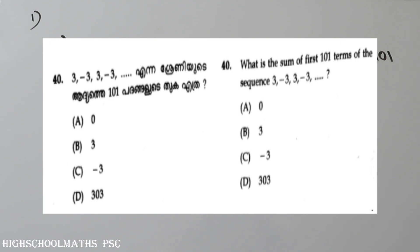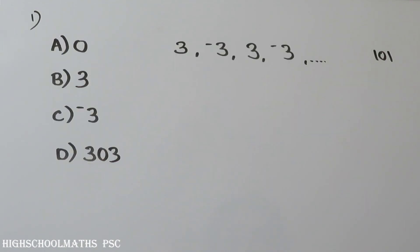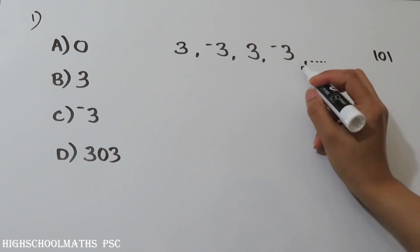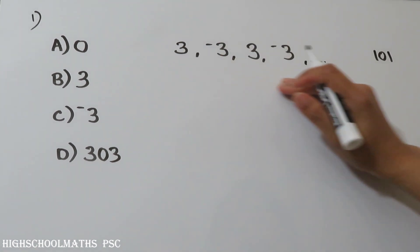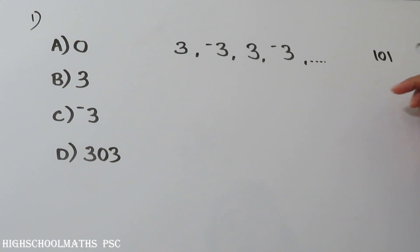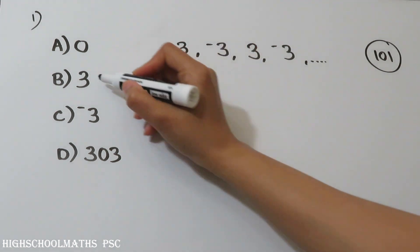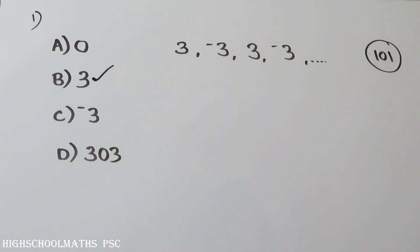The options are: 0, 3, minus 3, or not 3. Now, we have done 3, minus 3, minus 3. Let's go through this question. Here is the answer — option B, which is 3.